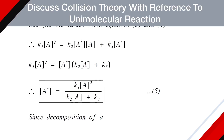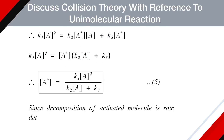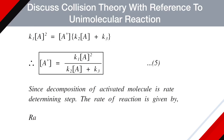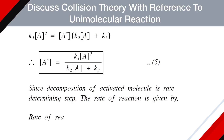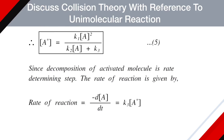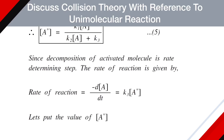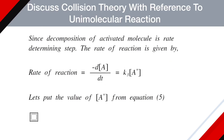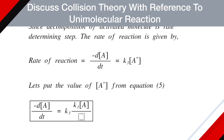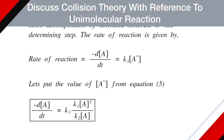Since decomposition of the activated molecule is the rate-determining step, the rate of reaction is given by: rate = -d[A]/dt = K3[A*]. Substituting the value of [A*] from equation 5: -d[A]/dt = K3 · K1[A]² / (K2[A] + K3). This is equation 6.